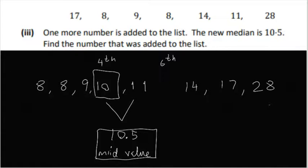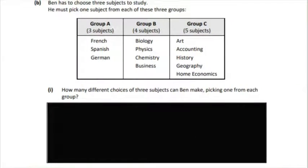So that works out as the additional term will be the fourth term with number 10. Finally, we have to look at the permutations of three groups. The first group has three subjects, group B has four and group C has five. So we want to see how many permutations Ben can make when he's choosing a subject. He can choose one from each.